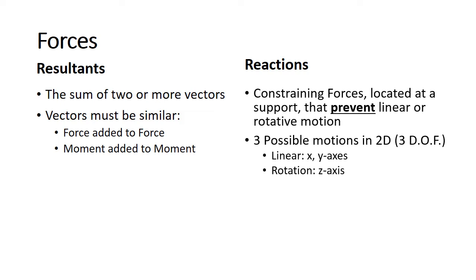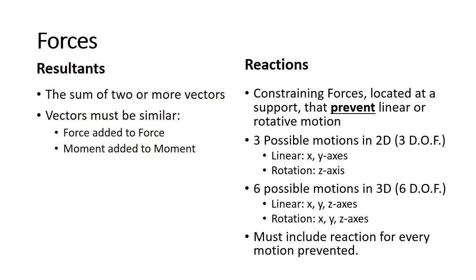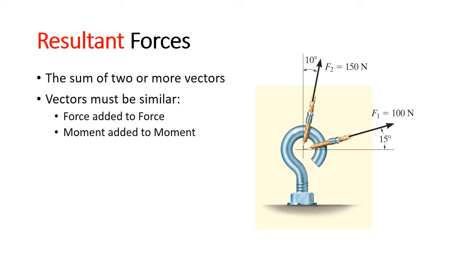In two dimensions there are three possible motions, and we call these degrees of freedom. Linear directions are x and y, and then rotation about the z-axis. In three dimensions we have six degrees of freedom, which mean six possible motions: linear motions in the x, y, and z directions as well as rotation about the x, y, and z axes. When we are creating our free body diagrams we must include a reaction for every motion that is prevented by the support. So resultant forces are just the sum of two or more vectors.